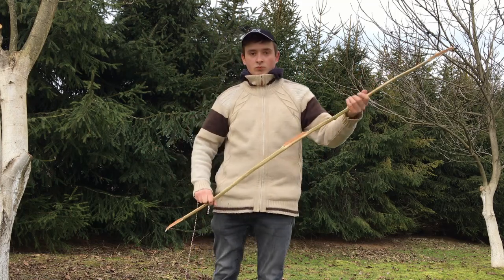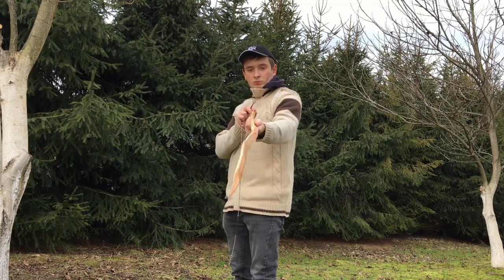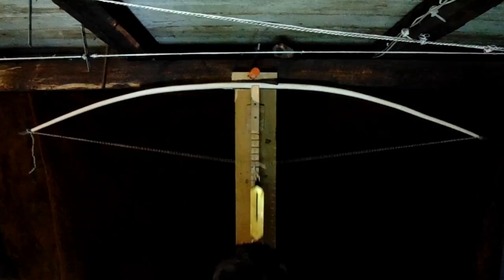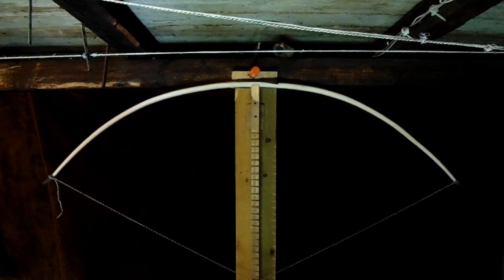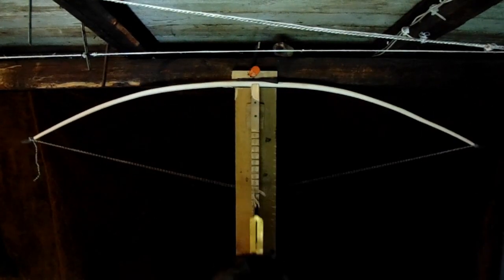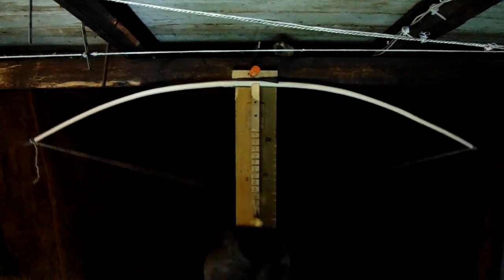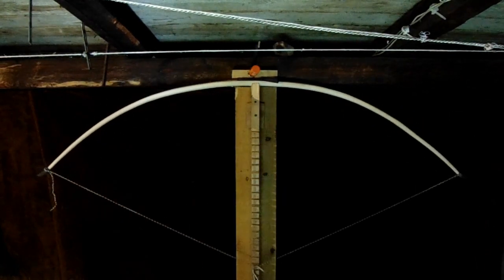The full draw length shouldn't exceed the length of working part of the single limb. So for example, 60 inches bow working on the whole length, if well tillered, it can be drawn up to 30 inches. It should be emphasized that we are talking about self-bows here.